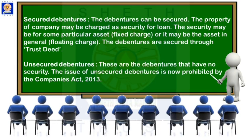Let us start with the first category, that is on the basis of security. Our first type is secured debentures. As said in the previous lecture, every debenture is by default a secured debenture. The debentures are secured by two points: first, the debenture holders are secured by having a charge on the assets of the company — it can be a fixed asset or a floating asset. Secondly, if there are more than 500 debenture holders, the company has to appoint trustees and sign a trust deed. These two points make the debentures a secured debenture.